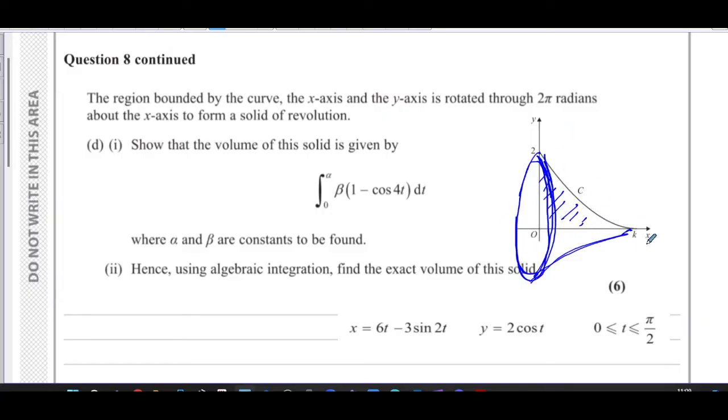So this red shaded region is rotated around the x-axis to form a three-dimensional shape between the curve, the x-axis and the y-axis. Now, remember this is k, this is where t equal pi over two, and this was equal to three pi in terms of x.